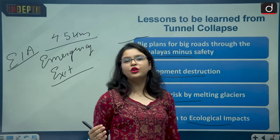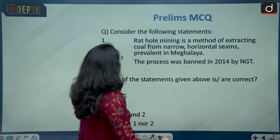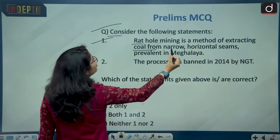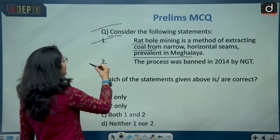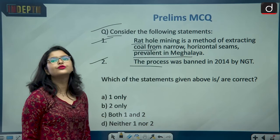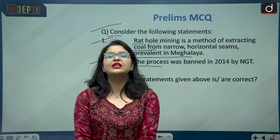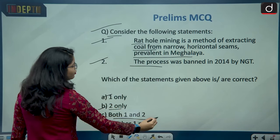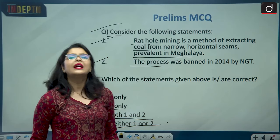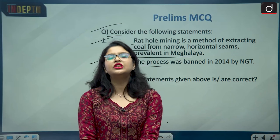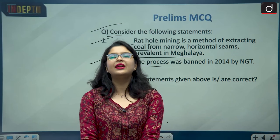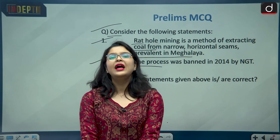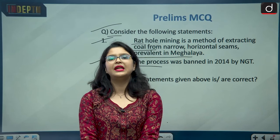Now for a practice question for your prelims examination. Consider the following statements: Statement 1 - Rat hole mining is a method of extracting coal from narrow horizontal seams prevalent in the state of Meghalaya. Statement 2 - The process was banned in 2014 by the National Green Tribunal. Which of the following statements is/are correct? Option A: 1 only, Option B: 2 only, Option C: Both 1 and 2, Option D: Neither 1 nor 2. Kindly drop your answer in the comment box below. I hope this session was insightful. Like and subscribe to the channel for more such updates. Thank you.